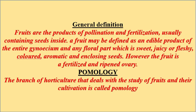General definition: Fruit is a product of pollination and fertilization. Pollination is the process of transfer of pollen grains, that is the male gamete, to the stigma — the region of the female flower where the pollen grains stick. After pollination, the fertilization process takes place, in which the male and female gametes fuse together, resulting in the formation of fruits and seeds.